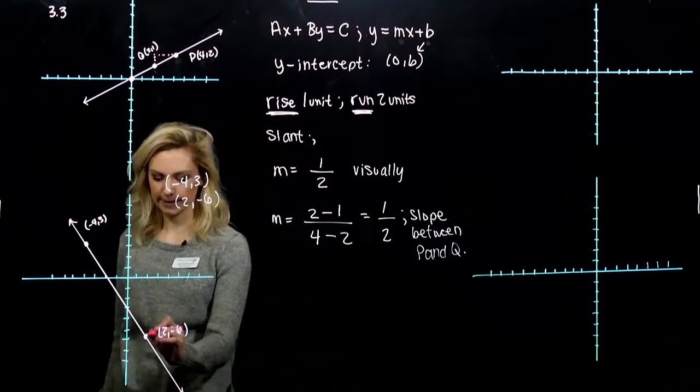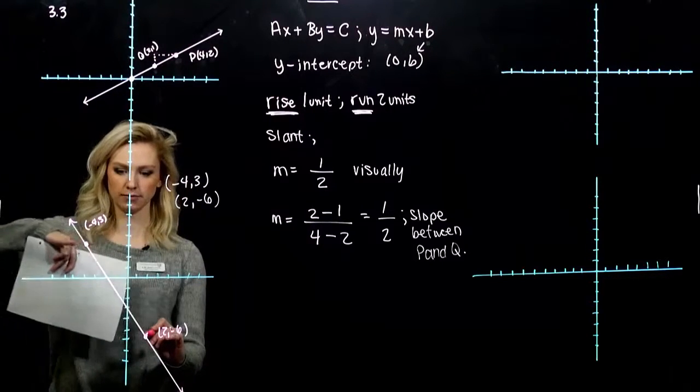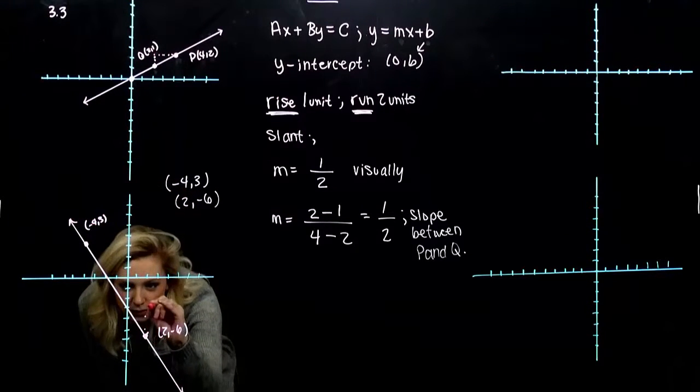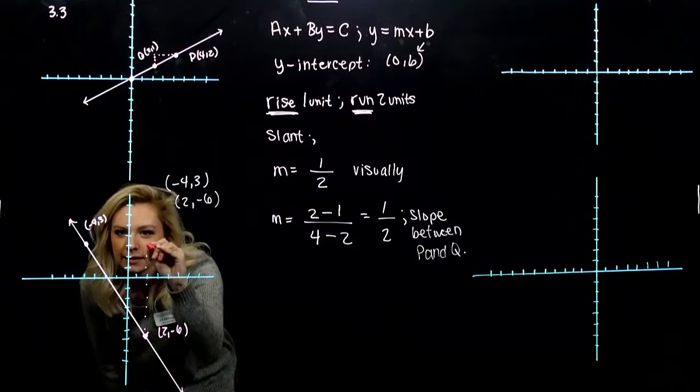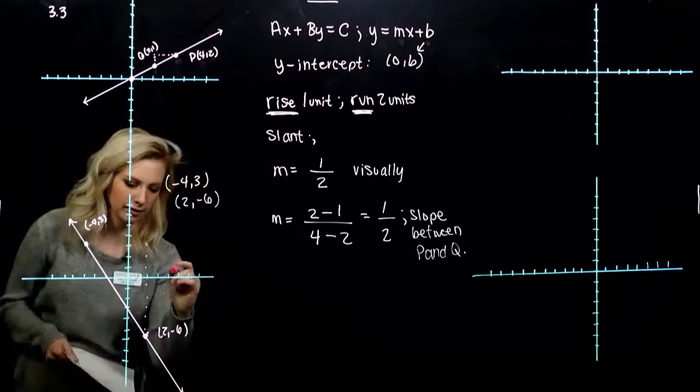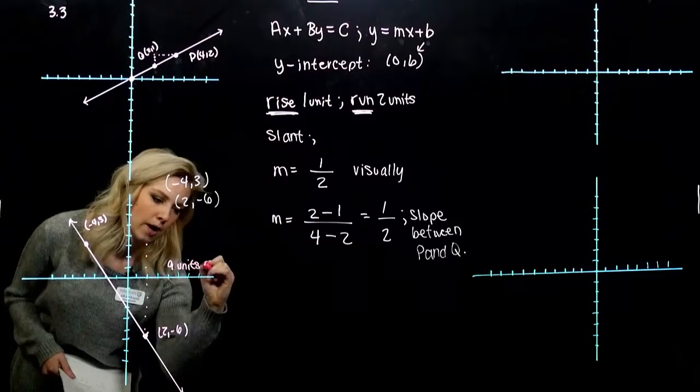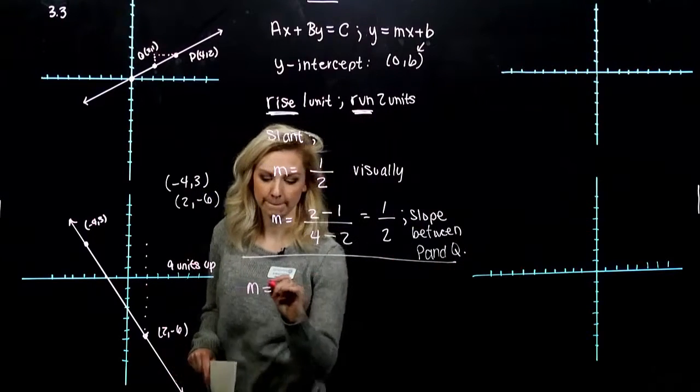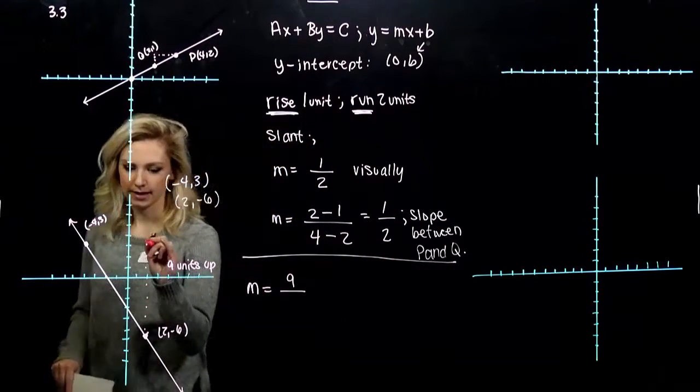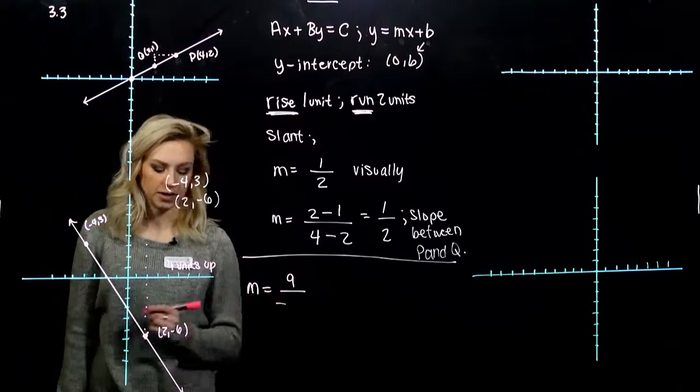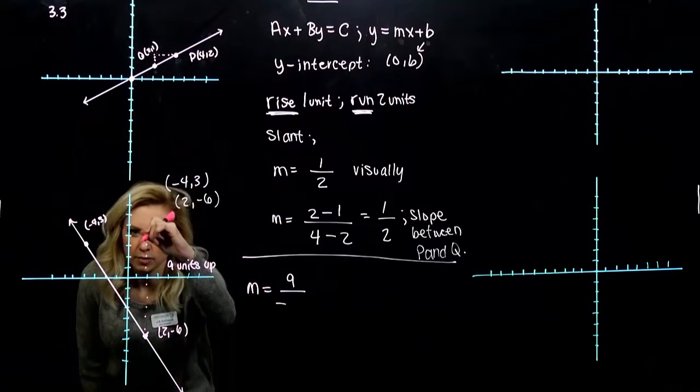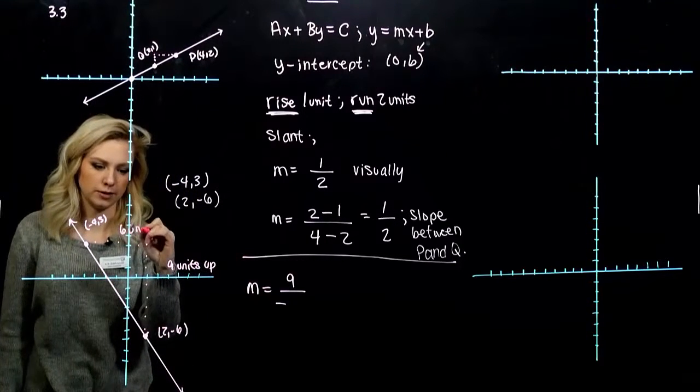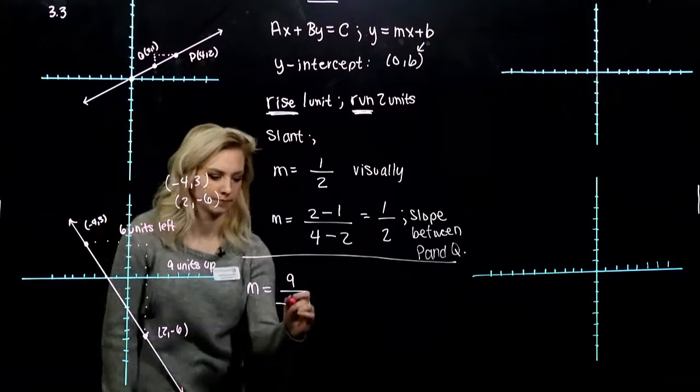Let's prove that visually. To move from one to the other, what do I have to do? From this point to get to the same horizontal level as this other point, how many units do I have to rise? Looking at 1, 2, 3, 4, 5, 6, 7, 8, 9. So altogether this was 9 units up, in the positive direction. And now I have to run in the negative direction. How many units? I'm at 2 and I need to move 1, 2, 3, 4, 5, 6. So this was 6 units left.